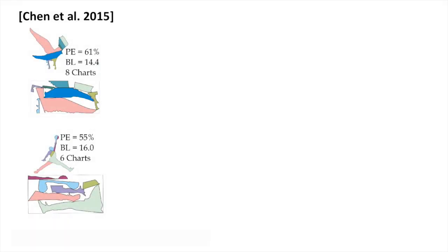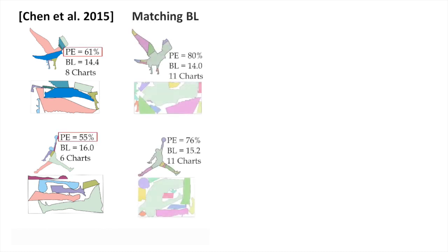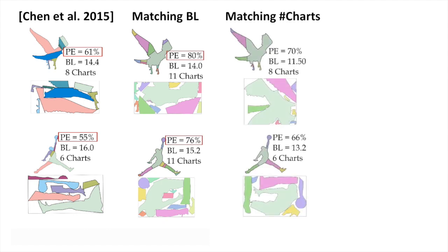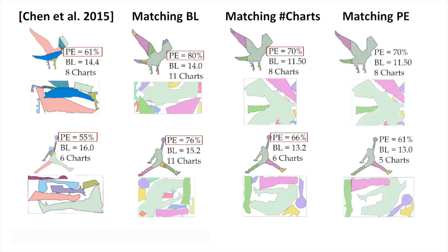The DAPR framework uses per-modality as a proxy for packing efficiency. We compare our method to this algorithm across a range of modalities. We achieve better efficiency with same or smaller boundary elongation, and also achieve better efficiency with the same chart count, and generate shorter boundaries for the same packing efficiency target.